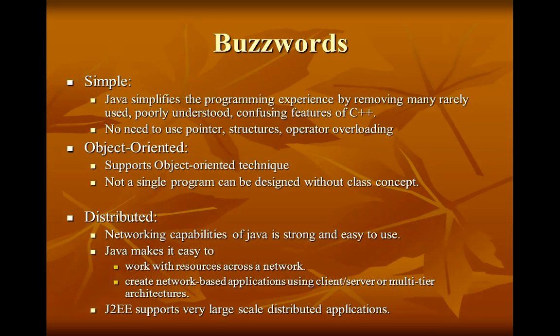How is it simple? Java simplifies the programming experience by removing many rarely used, poorly understood, and confusing features of C++. There is no need to use pointers, structures, or operator overloading. In fact, you cannot design a single program without having a class — Java is an object-oriented programming language.